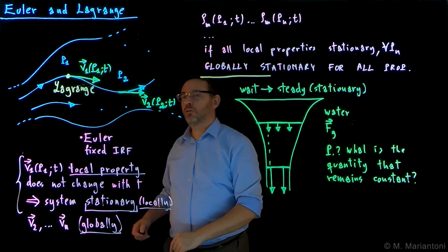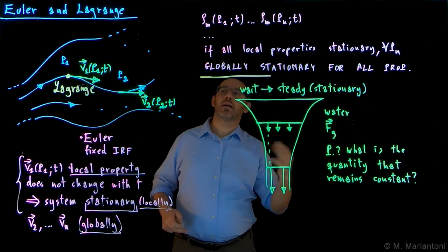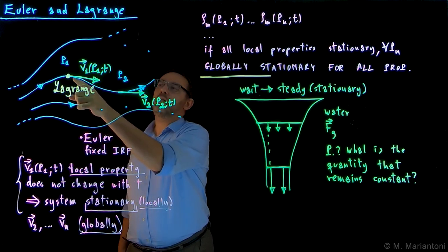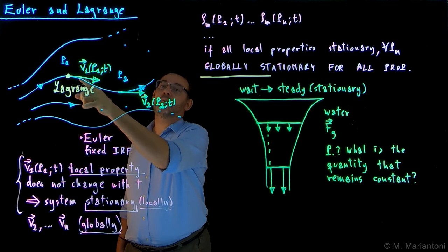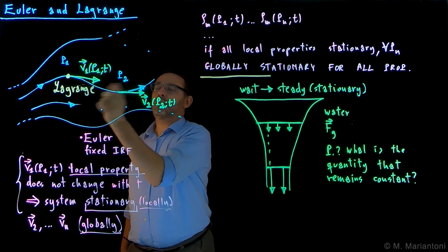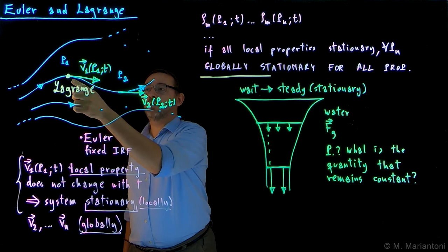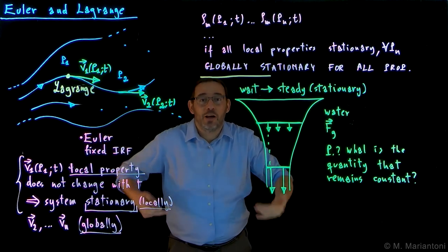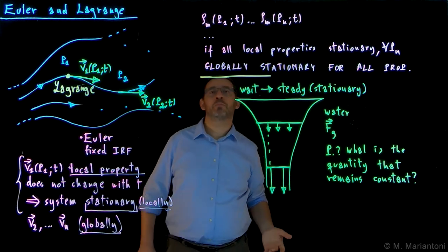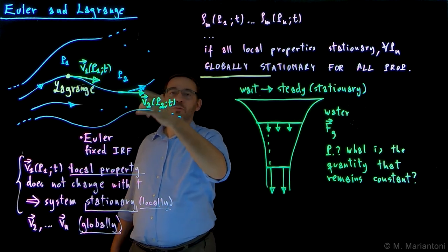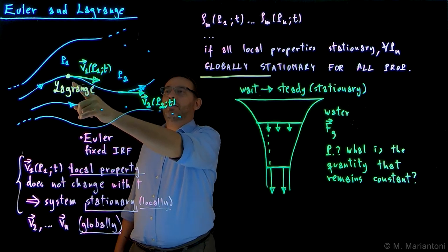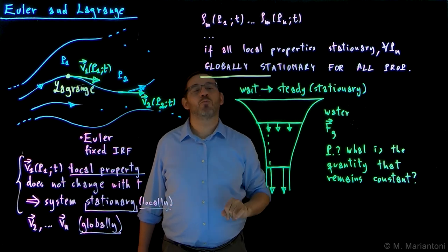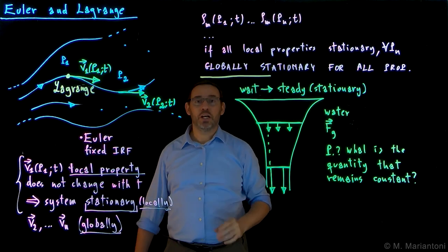So to summarize this video, we introduce the Euler reference frame and the Lagrange reference frame. In the Euler, I look at the particles from outside the river, let's say, and I just study the properties of those particles. As time goes by, different particles go through that point, and I try to understand whether these properties are the same or not. If they're the same, if they're constant, it's stationary. If not, it's not. Lagrange would follow these particles, which means, even if the system is stationary, it could be that that particle has different velocity at different points, and in order to understand that, understand this water tap kind of problem down here. That's it!